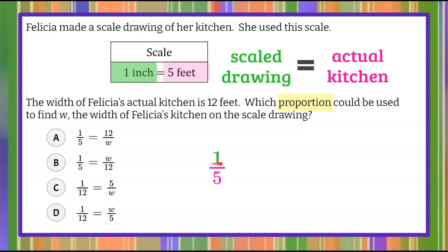So we know for every inch on the drawing, it represents five feet in the actual kitchen, and here is our ratio. So that's one half of our ratio. So we can already see that it looks like it's going to be A or B.